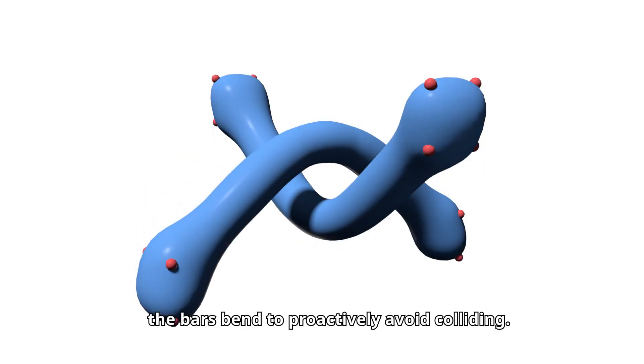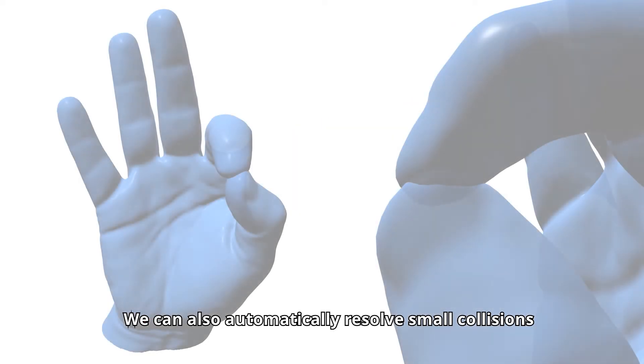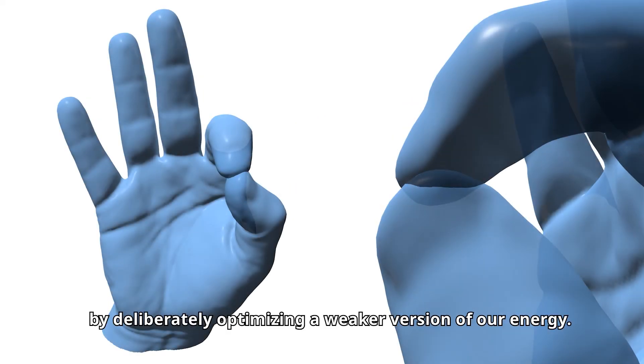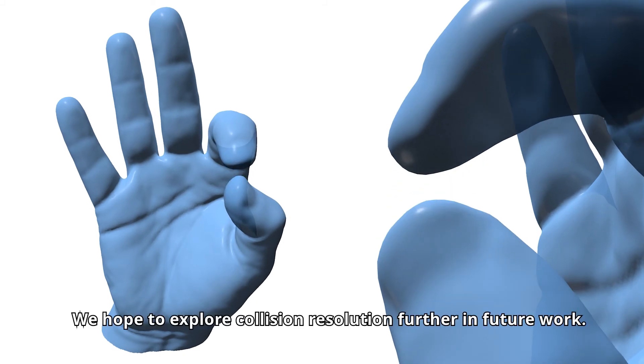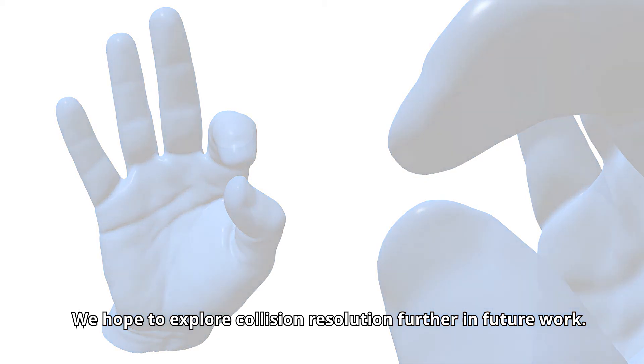Instead of passing through each other, the bars bend to proactively avoid colliding. We can also automatically resolve small collisions by deliberately optimizing a weaker version of our energy. We hope to explore collision resolution further in future work.